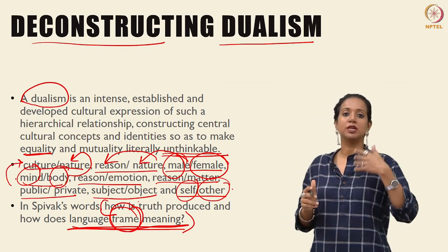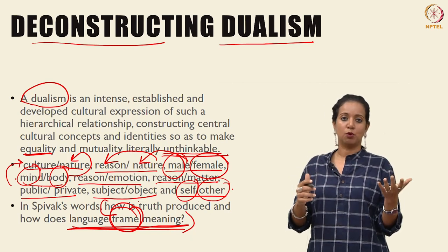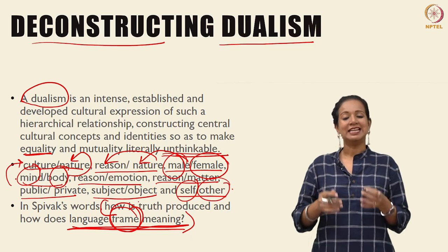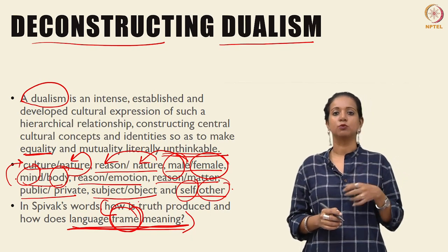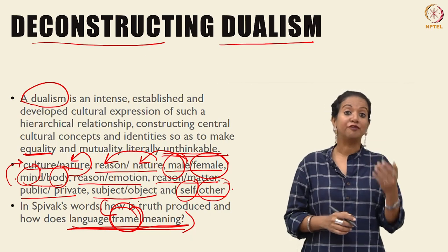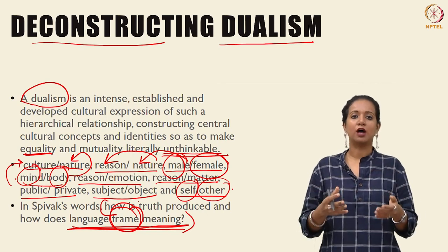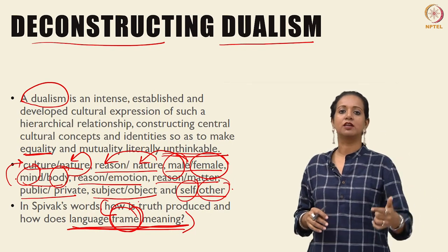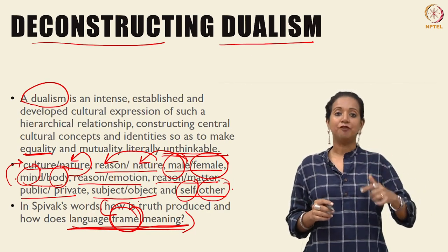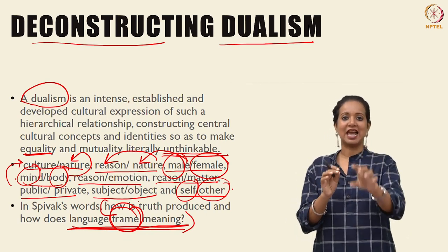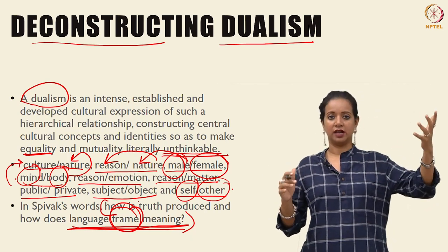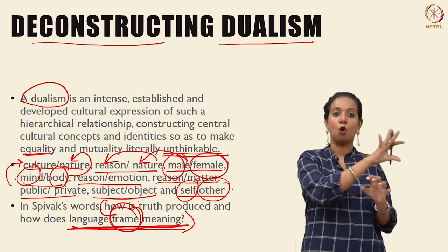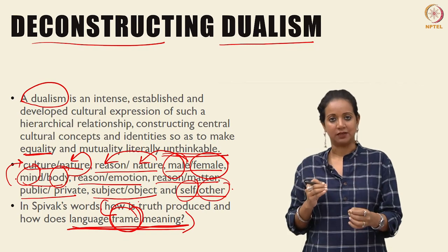It is only through language and understanding its mechanisms that we can free meaning from its hierarchical connotations — from the ways in which it seems to naturally produce hierarchical relationships where one is more powerful, one is less powerful, and we cannot imagine equality. Bringing it back to the mandate of feminist theory: we need to understand language and the ways in which it functions in order to produce the possibility of an equal society. Theoretical work must imagine language differently in order for us to think differently about gender in the world, destabilizing the ways in which gender operates as an axis of difference.